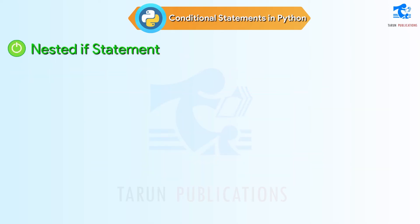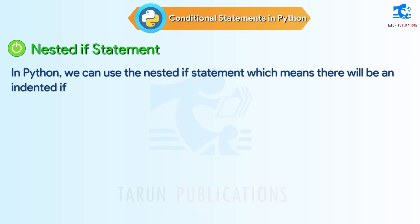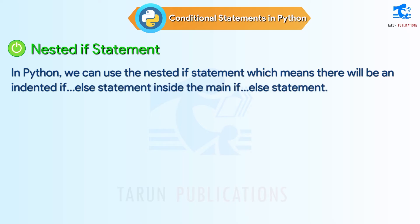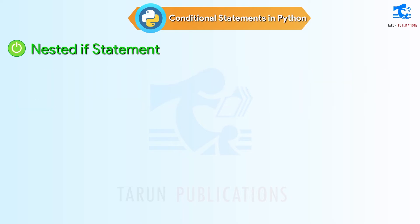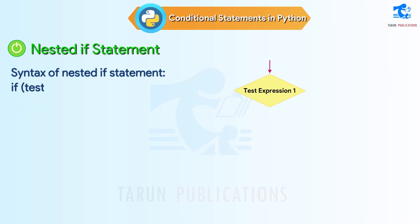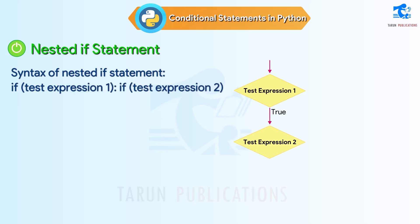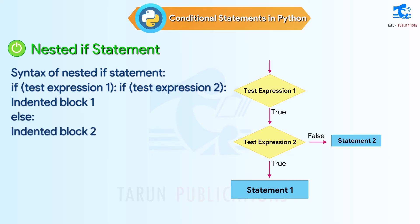Nested if-else statement: In Python, we can use the nested if-else statement, which means there will be an indented if-else statement inside the main if-else statement. The nested if-else statement will only be executed when the first if-else statement is true. Syntax: if test expression 1, if test expression 2, indented block 1; else indented block 2; else indented block 3.